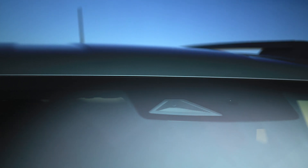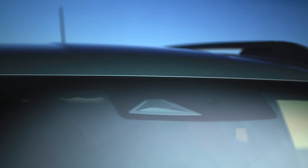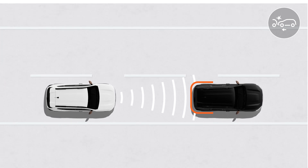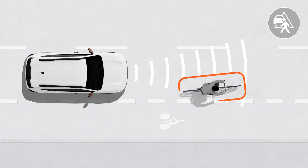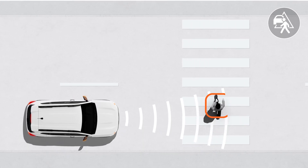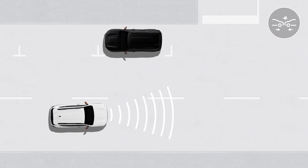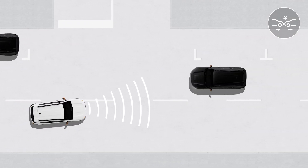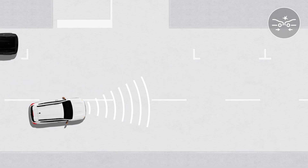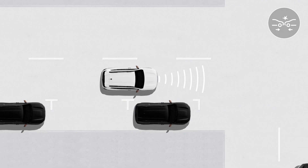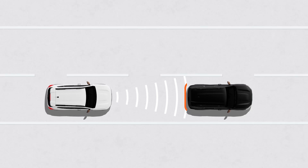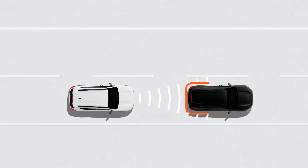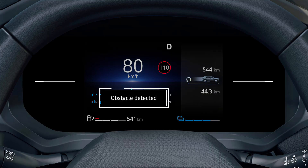The active emergency braking system uses data from the camera on the windscreen and the radar sensor in the front bumper to determine the distance between you and the vehicle in front, whether it is moving or stationary, as well as cyclists and pedestrians ahead. It warns you if there is a risk of collision, and also alerts you to the risk of a head-on collision with an oncoming vehicle if you begin to change direction, or in the event of impact with a vehicle crossing your lane at right angles. When the system detects a risk of collision, the message 'obstacle detected' appears on the instrument panel accompanied by an audible signal.